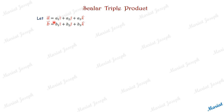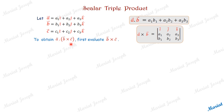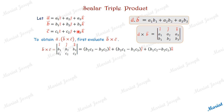Let's see how to evaluate the scalar triple product. Take vectors A = A1 i + A2 j + A3 k, B = B1 i + B2 j + B3 k. Then A dot B equals A1B1 + A2B2 + A3B3, and A cross B equals the determinant of the 3×3 matrix with rows i j k, A1 A2 A3, B1 B2 B3. Now, for the triple product A dot (B cross C), we first calculate B cross C using this formula.